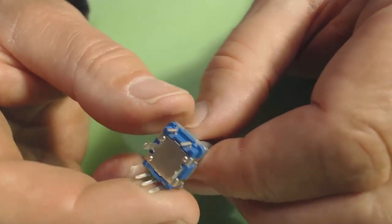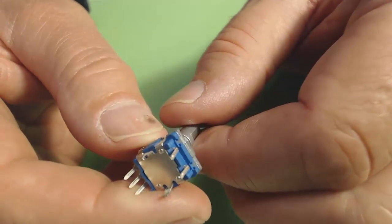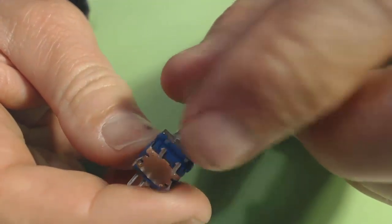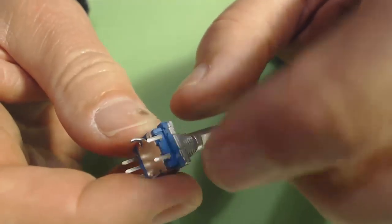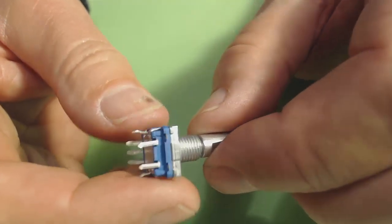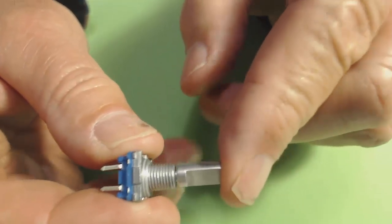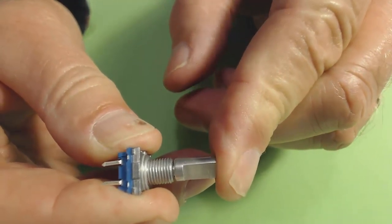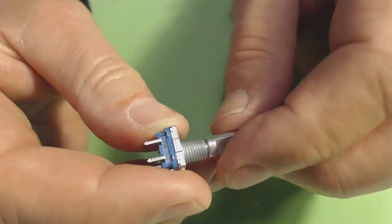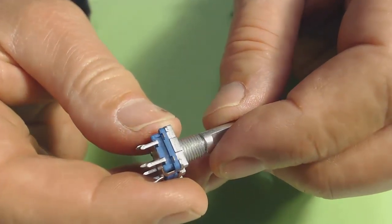On the bottom, we have a series of terminals. On one side, there are two terminals. These are connected to an internal push button. You see, we can press the shaft in, like an ordinary push button. That will close the contacts between those two terminals.